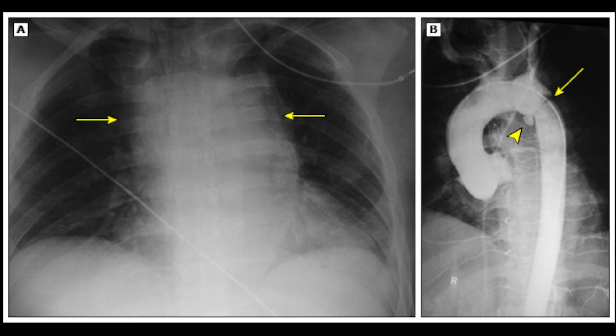In this next chest X-ray, the obvious finding should just jump out at you. You can take it systematically — the trachea is midline, no foreign bodies, no rib fractures — but this patient came in with ripping, tearing, sharp and sudden onset of chest pain radiating to the back, with a long-standing history of hypertension and coronary artery disease. Approximately 90% of patients with acute aortic dissection will have some chest X-ray abnormality. The classic finding of a wide mediastinum or aortic knob occurs in up to 76% of patients. Remember, a normal chest X-ray does not rule out acute aortic dissection.